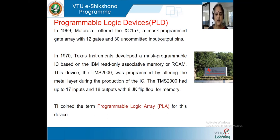In 1969, Motorola offered the XC-157, a mass programmable gated array with 12 gates and 30 uncommitted IPs. In 1970, TI, that is Texas Instruments, developed a mass programmable IC based on IBM ROM. This device, the TMS-2000, was programmed by altering the metal layer during the production of the IC. TMS-2000 had 17 inputs and 18 outputs with 8 JK flip-flop memory. Texas Instruments coined the term programmable logic array for this device.